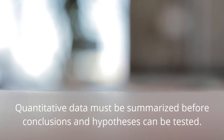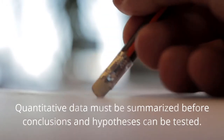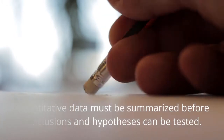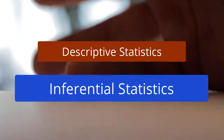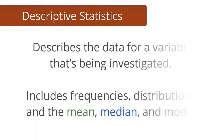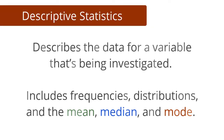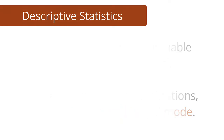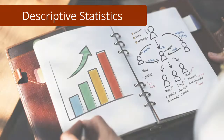Analyzing qualitative data takes a lot of time and hard work. Quantitative data needs to be summarized so that we can draw conclusions and test hypotheses. Two main types of statistics are used for this: descriptive statistics and inferential statistics. Descriptive statistics describes the data for a variable that's being investigated, including frequencies, distributions, and the mean, median, and mode. Descriptive statistics are often presented using charts and figures.